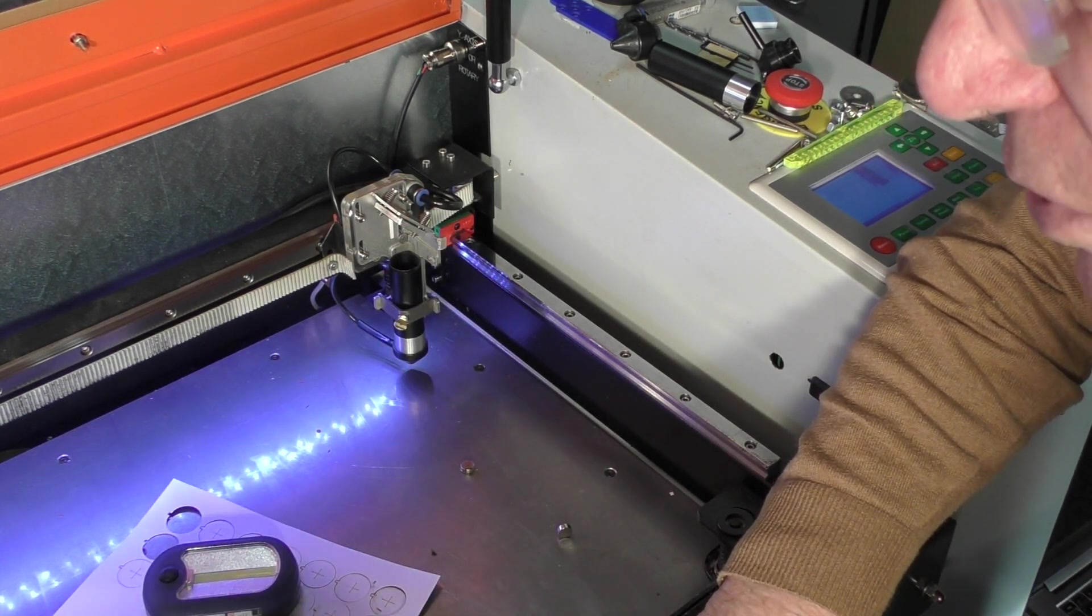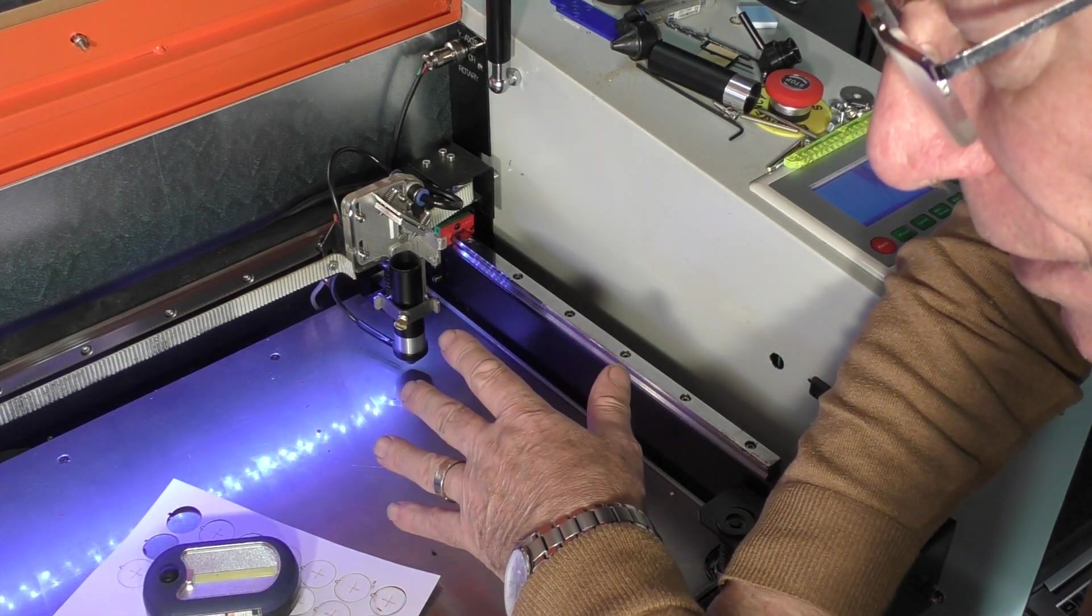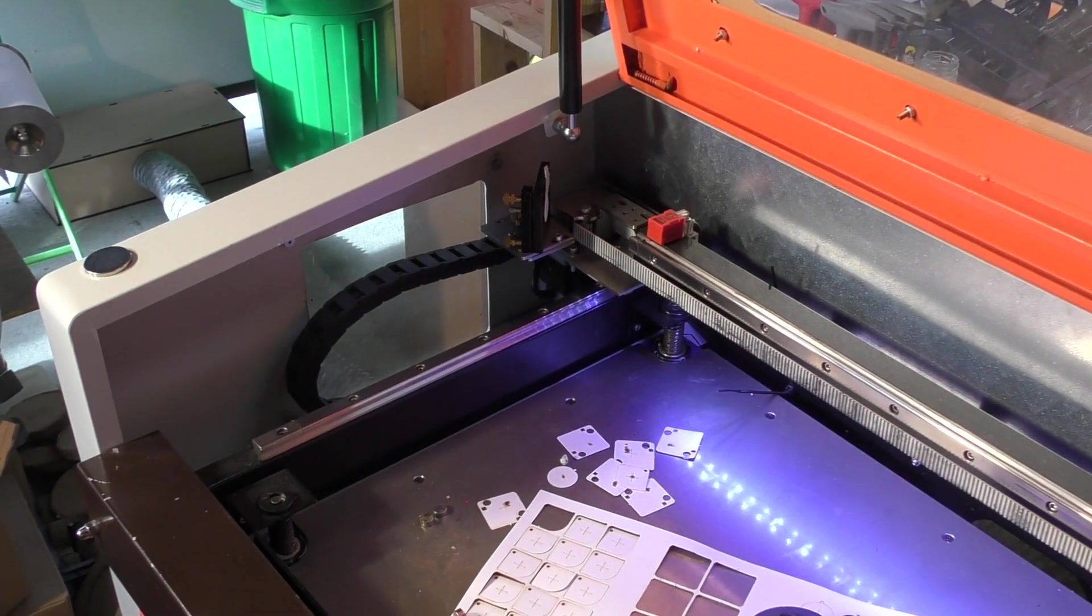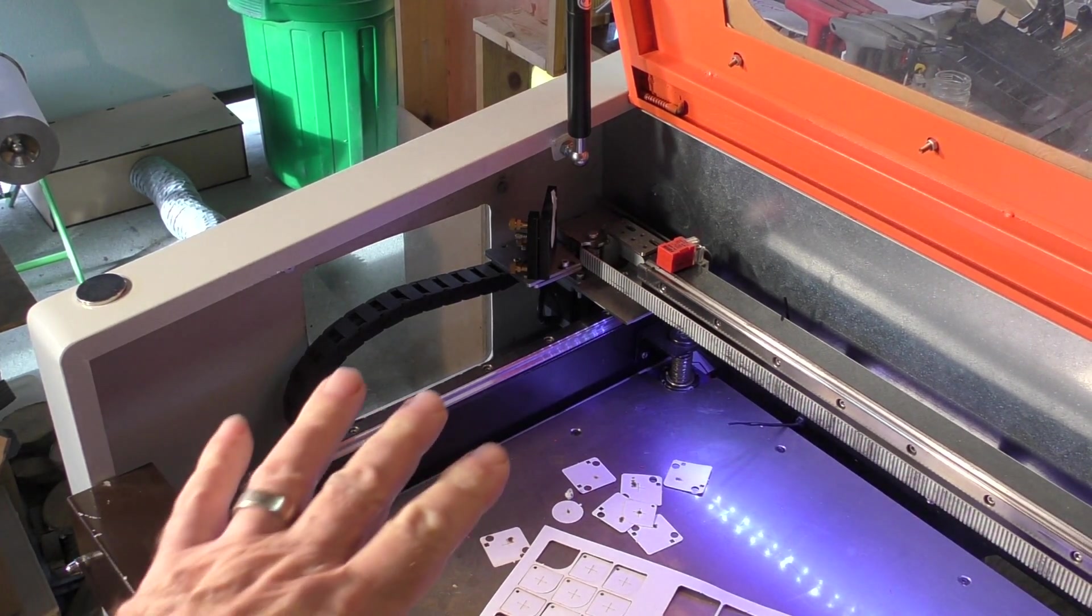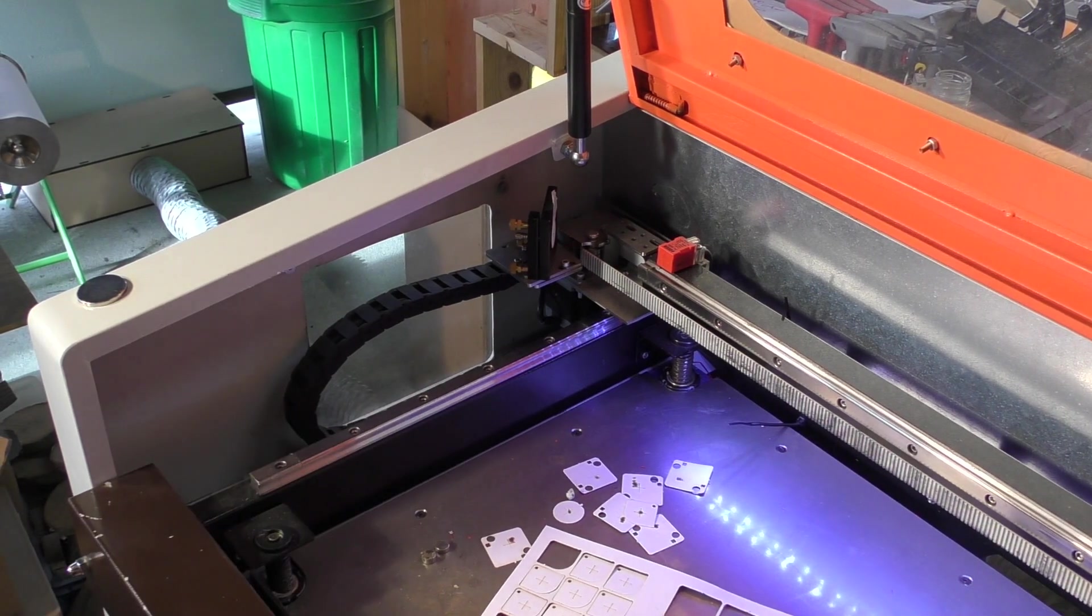And what I'm going to try and do today is to first of all illustrate the problem and then how we're going to fix it. Now this machine is already roughly set up, it's pretty well set up to be honest. The first thing we're going to do is to set the Y-axis and we've done that by putting a target on the mirror.